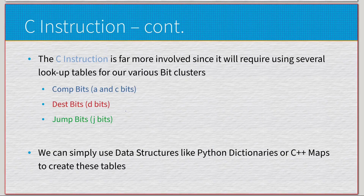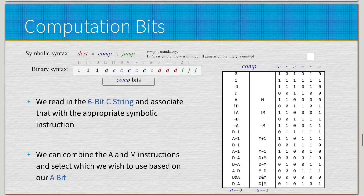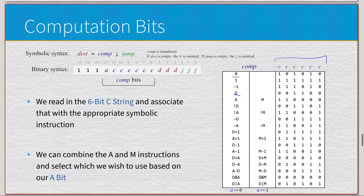Since the C-instruction is far more involved, it requires using several lookup tables for our various bit clusters. The comp bits are the a-bit and c-bits; the dest bits are the d-bits; and the jump bits are the j-bits. We use a data structure like a Python dictionary or C++ map — basically associative arrays — to create these lookups. We read in the bits and associate them with the appropriate symbolic instruction.